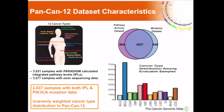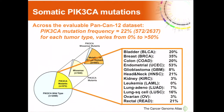The pan-cancer dataset characteristics used here were the frozen datasets employing platforms including exon sequencing, RNA expression, and DNA copy number. We had over 3,500 samples with Paradigm Analysis — that is, with IPL values — and over 3,200 samples with exon sequencing data. The overlap set shown in the Venn diagram is 2,637 samples with both IPL and PIK3CA mutation data. The cancer-type distribution among the valuable samples is very different, reflected in the overall TCGA accrual of these samples, and that's going to have to be taken into account.